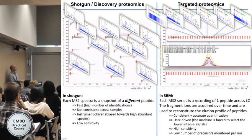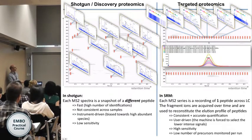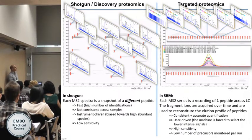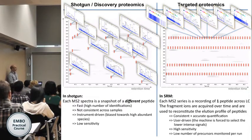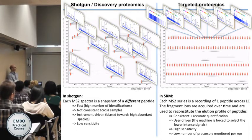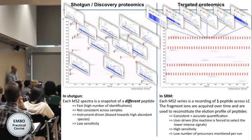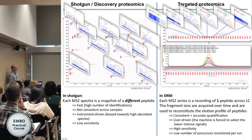In SRM, you focus your search into specific fragment masses, and what you record is the intensity of those fragments rising and decreasing with the elution of your peptide. The big difference is that you get very consistent quantifications because you have a chromatographic area you can integrate. It's user-driven — you as a user force the machine to select the peptides you want. You have much higher sensitivity, but unfortunately you have to limit the number of precursors you can monitor. These methods are almost completely antithetical: one is very fast but not consistent or sensitive; the other is very consistent and sensitive but not fast.